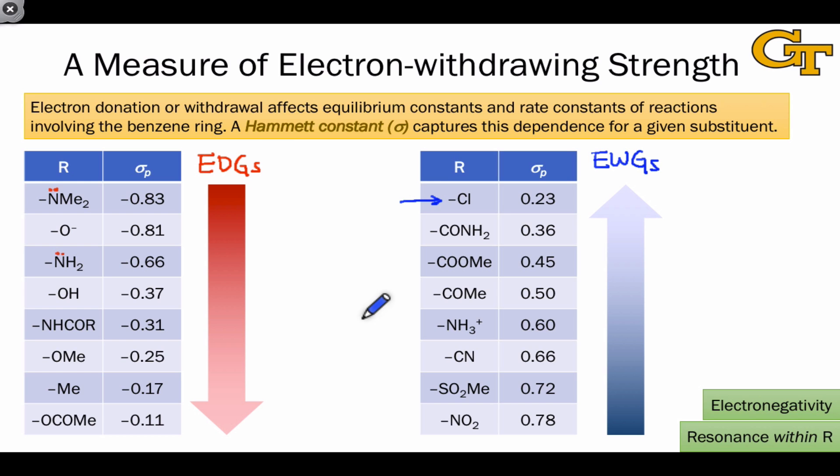Roughly speaking here, we can make a distinction between weakly-withdrawing substituents, which are essentially the halogens and that's it, moderately-withdrawing substituents, which have sigma p-values between about 0.35 to, let's say, 0.55, and the strongly-withdrawing substituents which are going to have sigma p-values in excess of 0.55. We can do the same thing on the donating side, and just as a rough cutoff, the strongly-donating substituents are amines and O-.